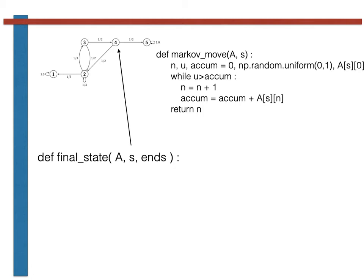The final argument to this function is ends. This is a numpy array, a 1d numpy array, that contains the list of all the recurrent states in the chain.